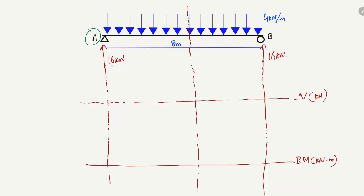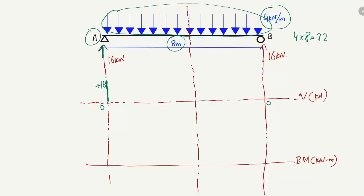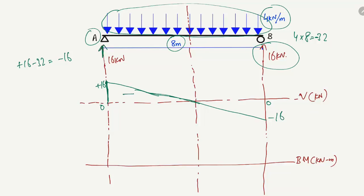Starting from support A, the 16 kN upward reaction brings the shear force up to +16 kN. Then the UDL acts downward: 4 × 8 = 32 kN total, so the shear force decreases linearly. At support B: +16 − 32 = −16 kN, giving a straight linear line from +16 to −16. This is the shear force diagram.